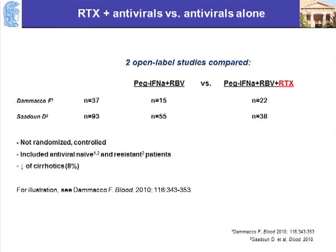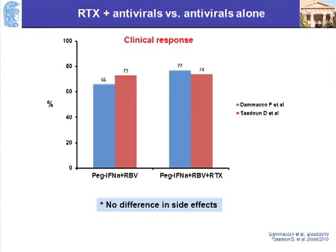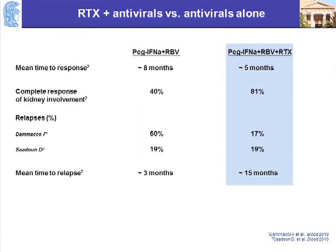These studies included naive and treatment-resistant patients, with no cirrhotic patients included. It appears that patients who got rituximab on top of antiviral treatment did a little better, though the difference was not large. There were no differences in side effects. Notably, adding rituximab produced clinical response much faster — about five months compared to eight months with antiviral therapy alone. It may work better in patients with severe kidney involvement. In terms of relapses, one study showed 17% versus 60% relapse rates, and mean time to relapse was much longer with rituximab plus antivirals.